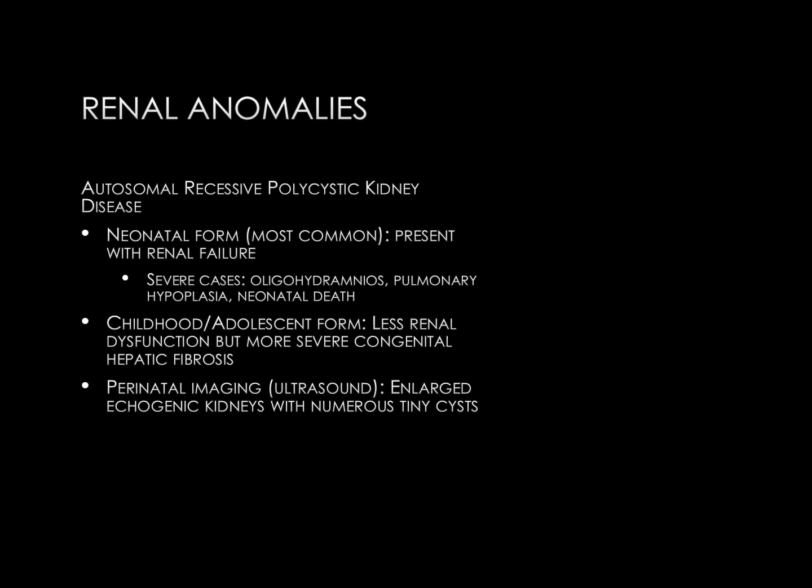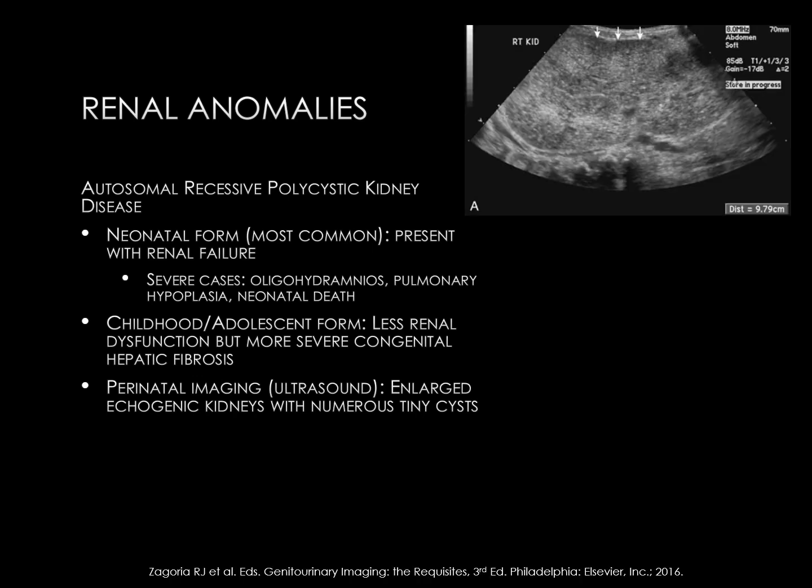Perinatal imaging is usually performed with ultrasound, which demonstrates enlarged hyperechoic kidneys with numerous tiny cysts. The ultrasound image in the right upper aspect of the slide shows an enlarged kidney in a newborn measuring 9.8 centimeters, whereas typically newborn kidneys are 5 to 6 centimeters. The renal cortex, medulla, and pyramids are difficult if not impossible to differentiate, as the kidney is diffusely hyperechoic. The white arrows point to numerous tiny hypoechoic cysts.